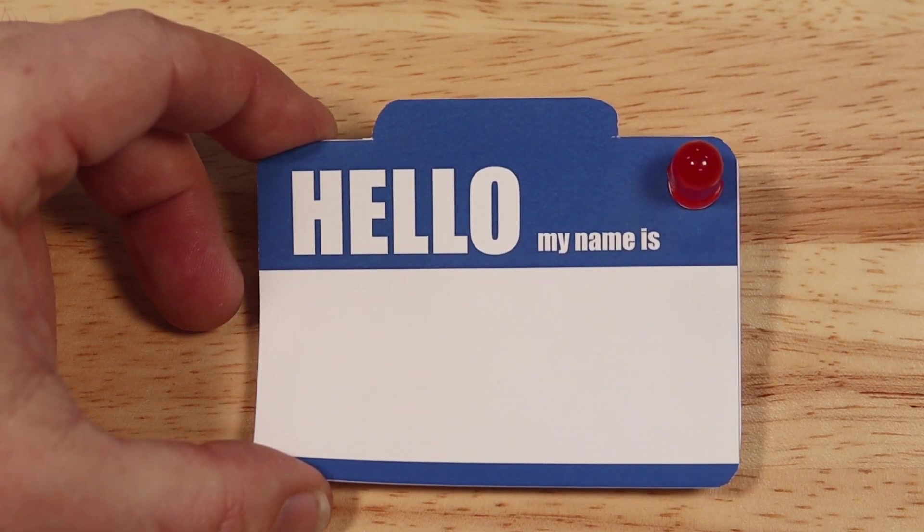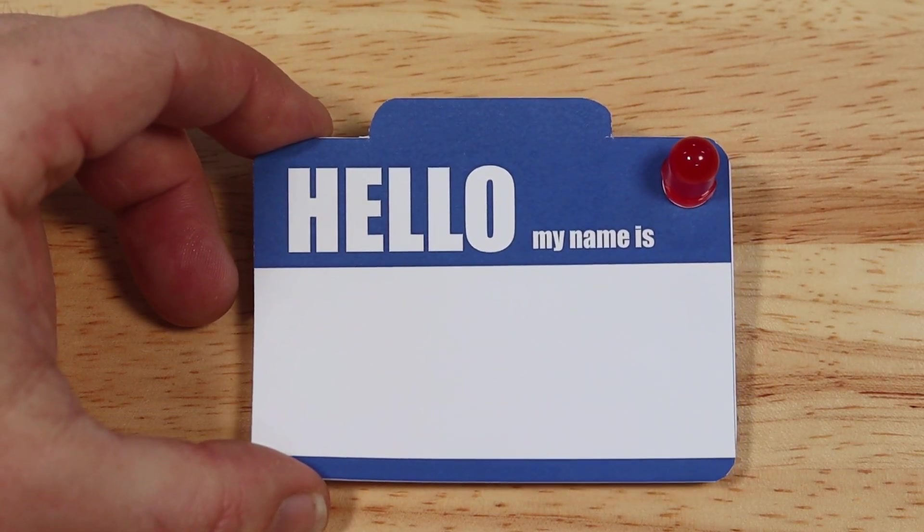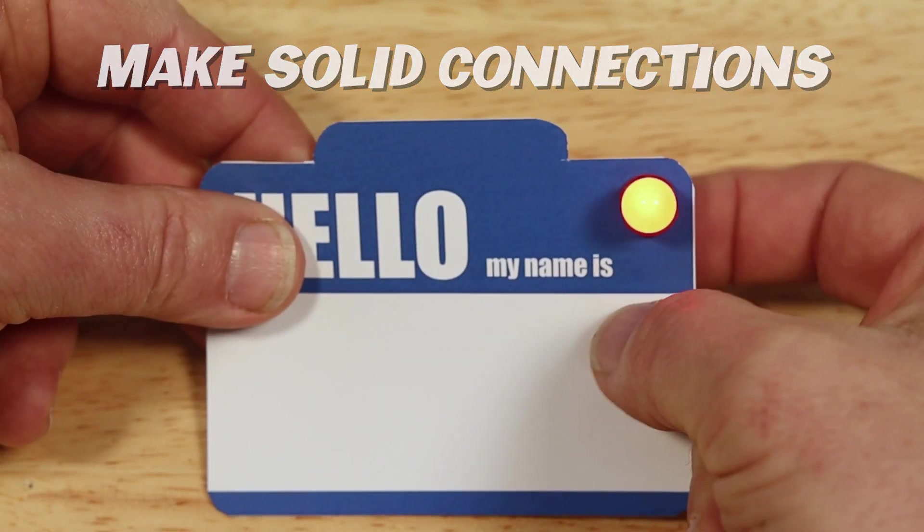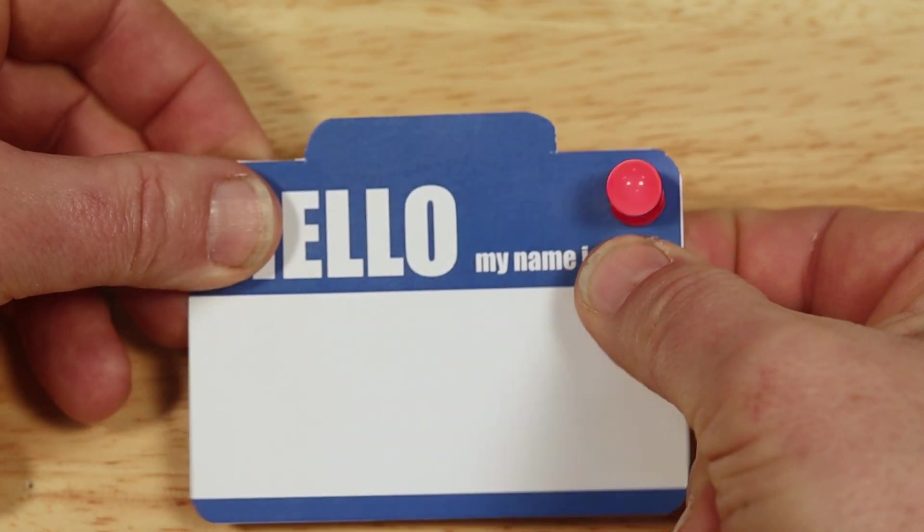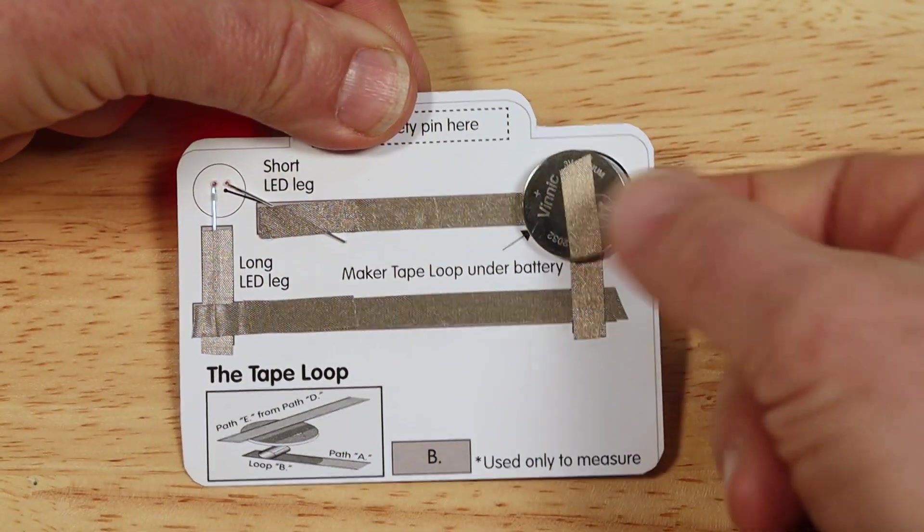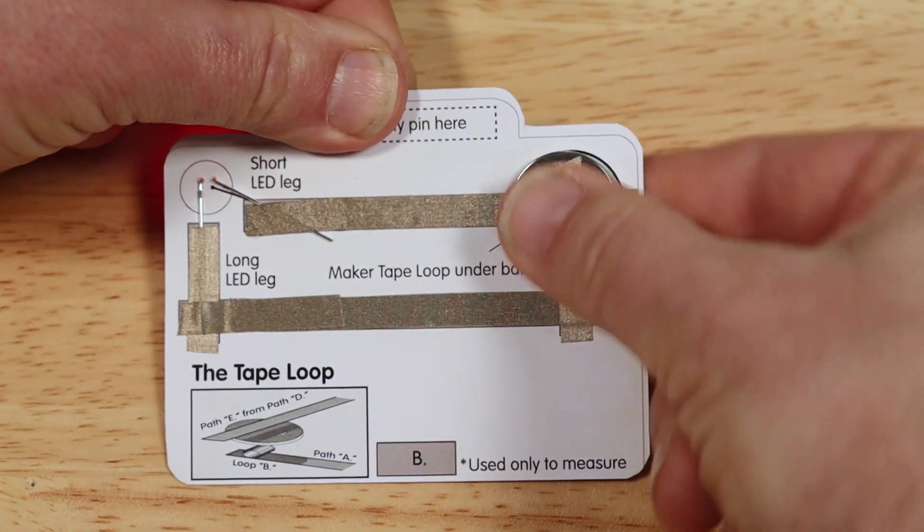Before any other troubleshooting, let's just make sure that we have good connections. That's especially true if the LED comes on, but flickers or is dim. Let's start at the battery. Give it a gentle squeeze to make sure it has a good connection.